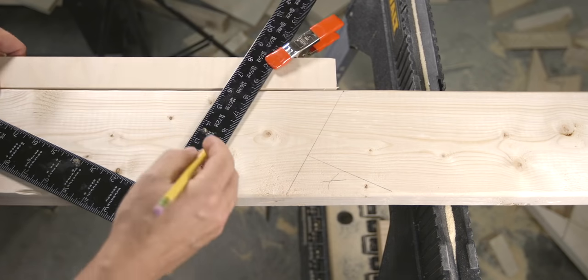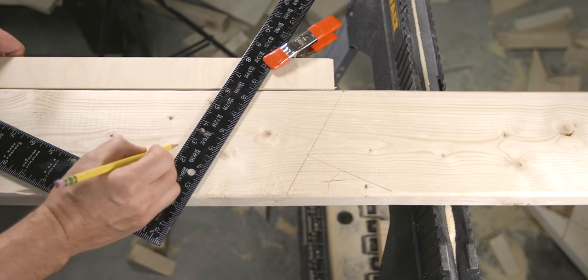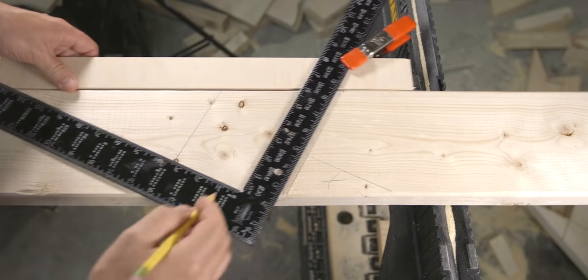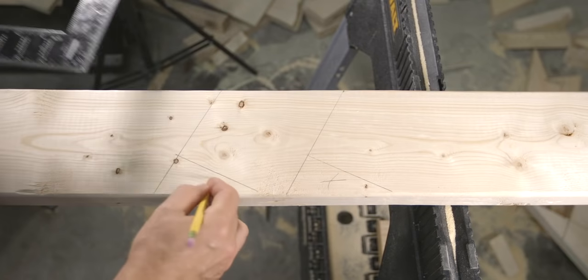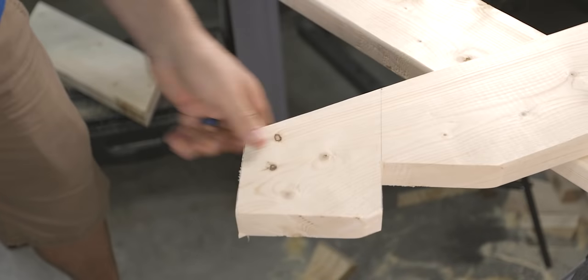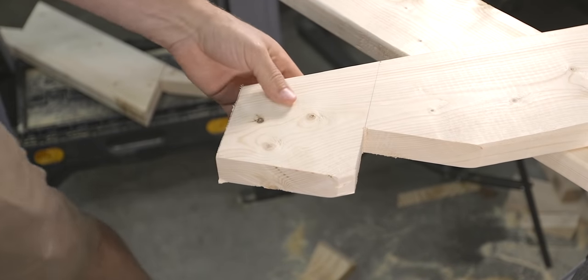The last line to mark is the soffit cut which forms the four inch fascia. Measure down four inches, make a mark and then draw a line and this all gets cut out. Once everything is cut out, you now have a finished common rafter.